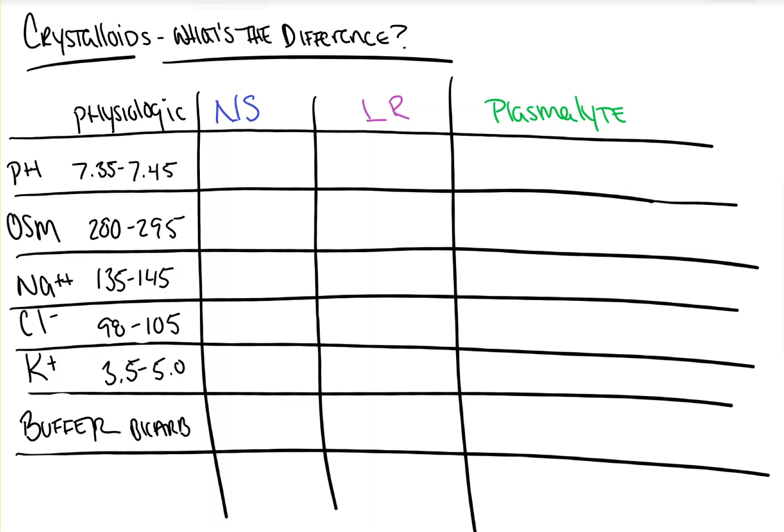As you can see here on the left side of the screen, I've written down a couple of the normal values that we're going to refer to when looking at each solution. We have our pH, which is physiologically between 7.35 and 7.45. We have serum osmolality, which is about 280 to 295.